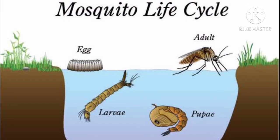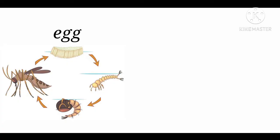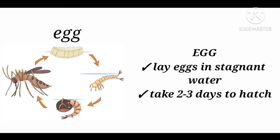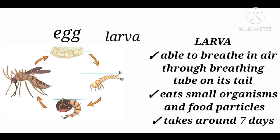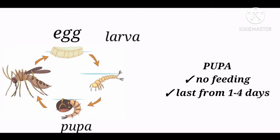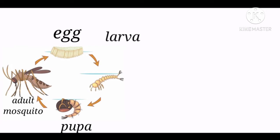Next we have the life cycle of a mosquito. A female adult mosquito is the only one that can lay eggs in stagnant or still water. They lay eggs attached to each other, forming a raft. Eggs take two to three days to hatch. The egg hatches into a larva or wriggler that attaches itself on the water's surface. It is able to breathe in water through the breathing tube on its tail and eats small organisms and food particles found in water. Larva forms a pupa, and no feeding happens at this stage, which lasts from one and one half days to four days. An adult mosquito comes out of the pupa and is able to reproduce itself again.